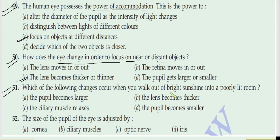Question 51: Which of the following changes occur when you walk out of bright sunshine into a poorly lit room? When it becomes dark, our eyes need to adjust. In bright light the pupil is small, and when we enter a dark room, very little light enters our eyes. So the pupil expands — becomes larger — to let in more light. After some time, the pupil expands and we are able to see things clearly. The correct answer is A: the pupil becomes larger.